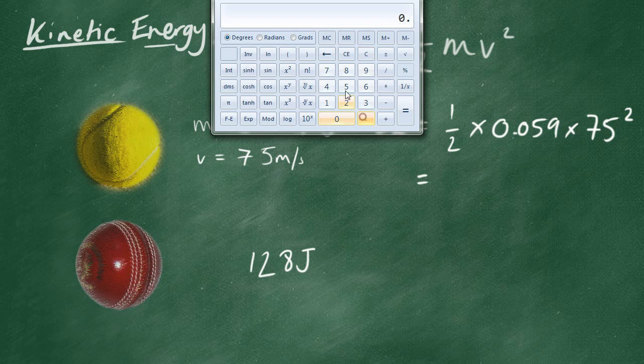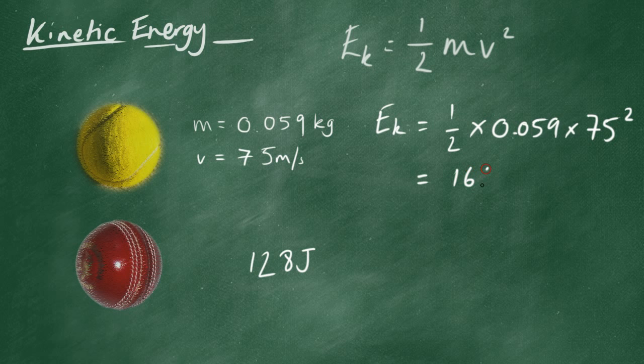0.5, times 0.059, times 75, squared. 166, basically, to three significant figures. 166 joules. In this situation, I'd rather have the bowler bowl at me with the cricket ball rather than the tennis player aim a serve straight at me.